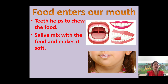The four types of teeth are incisors, canines, molars, and premolars. Now, the saliva mixes with the food and makes it soft. Whenever we are eating food, the saliva mixes in the food so that we can swallow it easily.